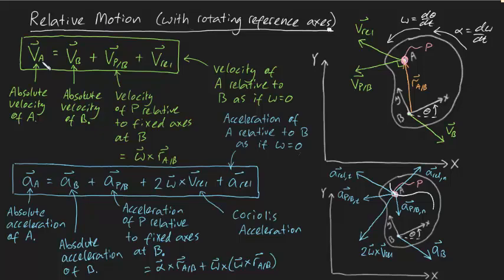It looks like we're done — we've found expressions for the absolute velocity and absolute acceleration of A, and drawn each of these vectors on the two diagrams. I know it can look quite scary to see all of these vectors, but rest assured: when you do a few example problems, you realize it's not as hard as it looks, and in fact a lot of these vector terms come quite intuitively. I'll do a few of those example problems for you now. Cheers.